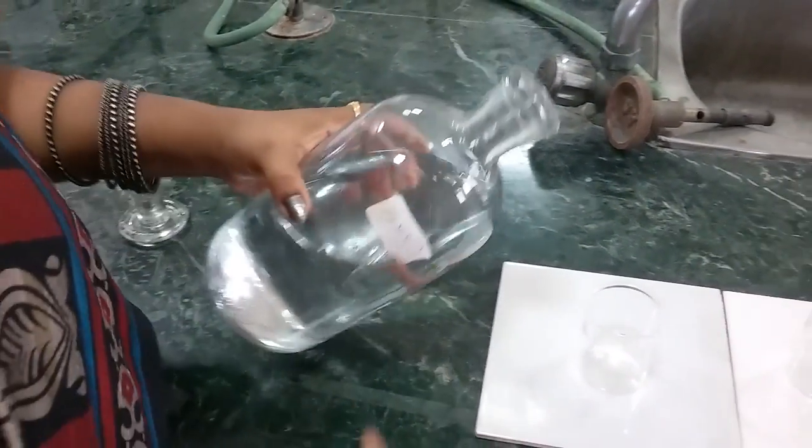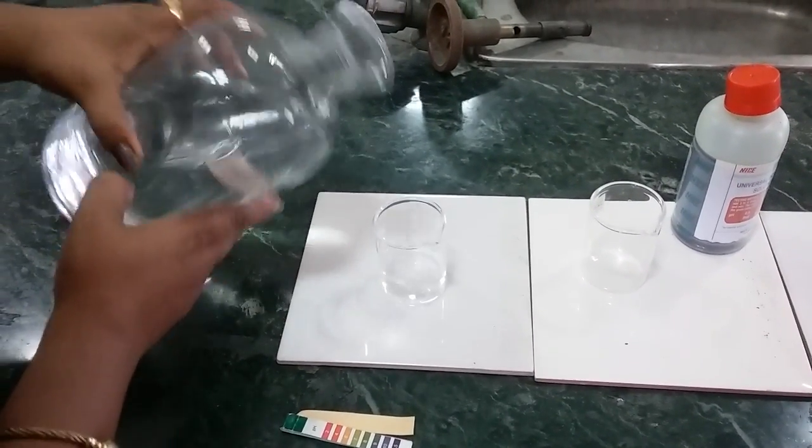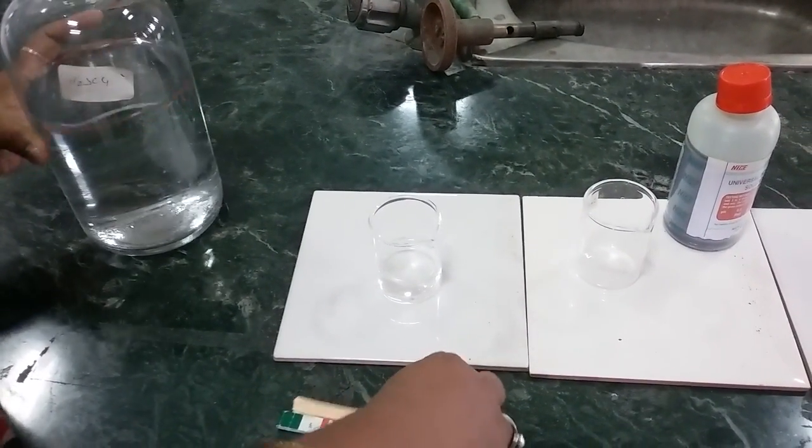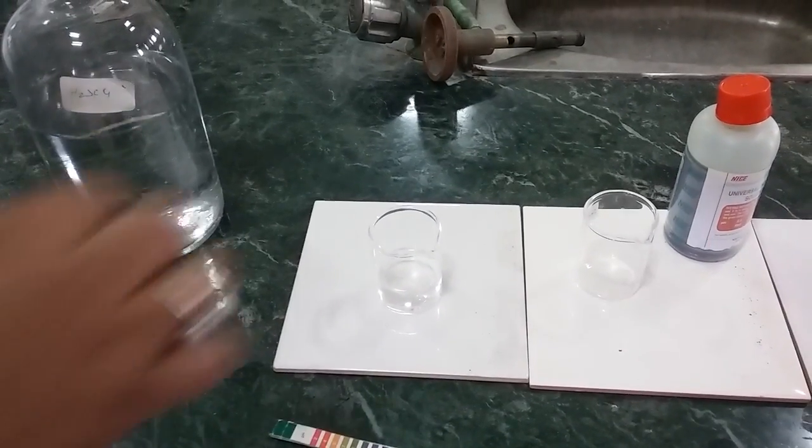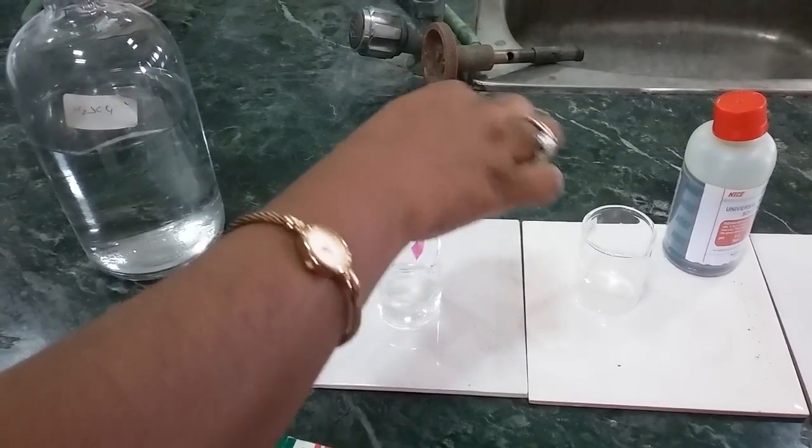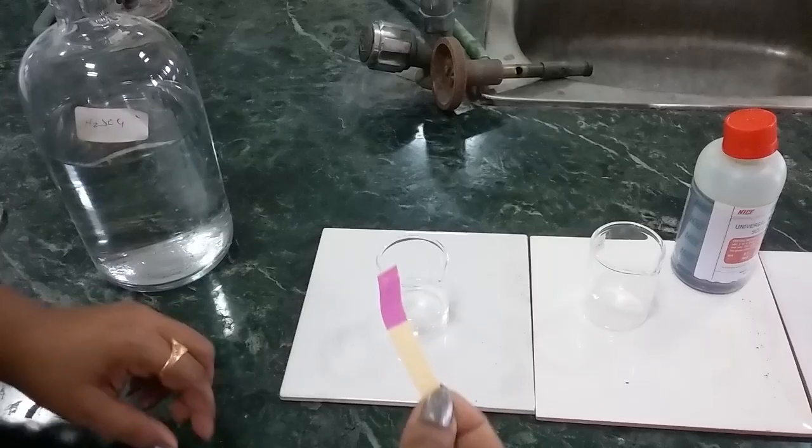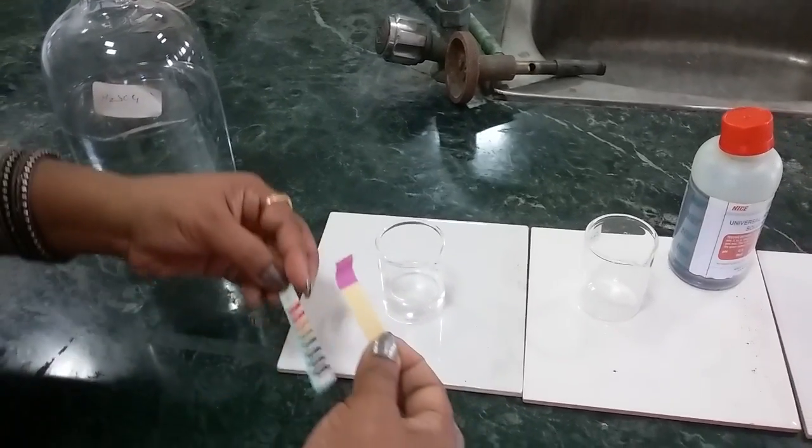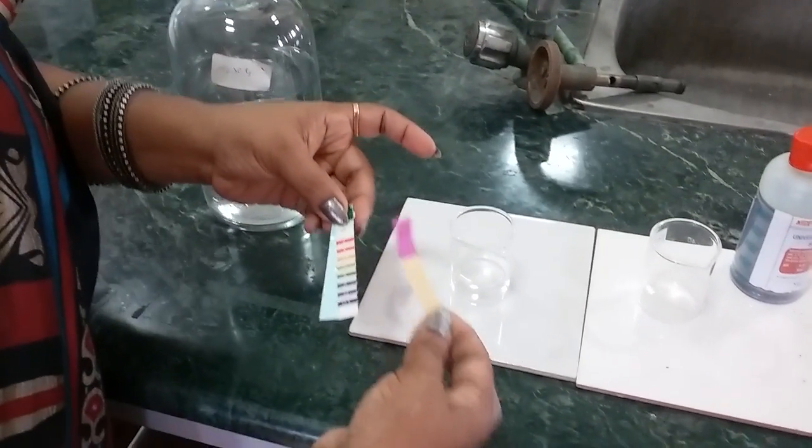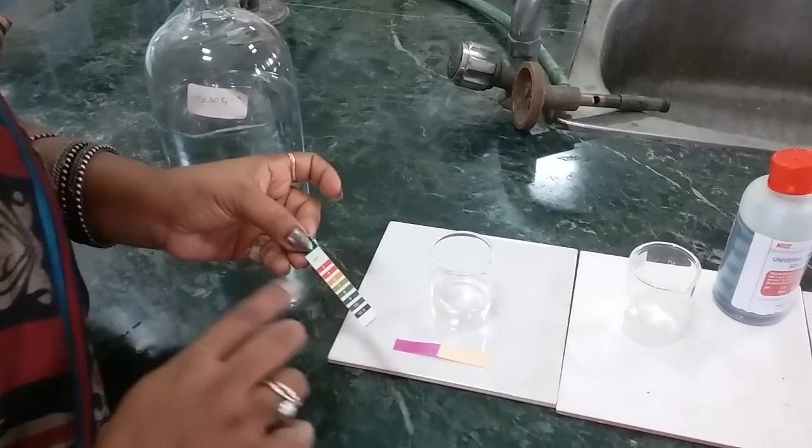I am going to pour H2SO4 in this to test the pH of the sulfuric acid. When I dip the pH paper, it turns into pink. That shows it is an acid. You can see the color.